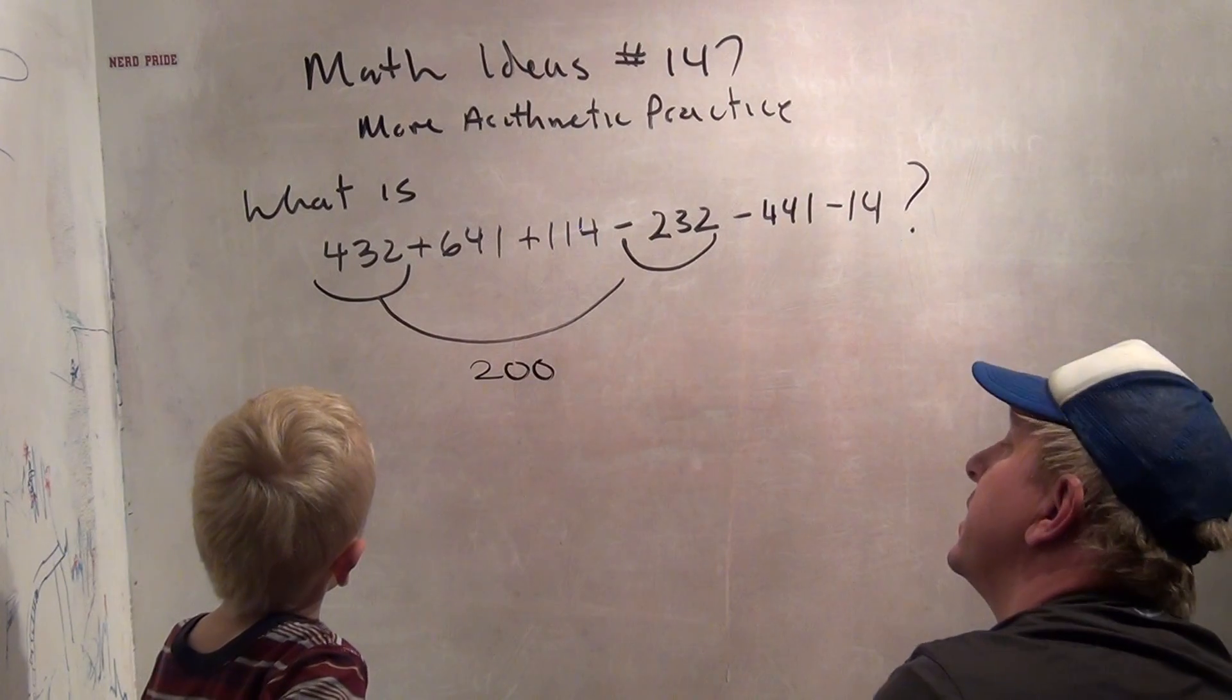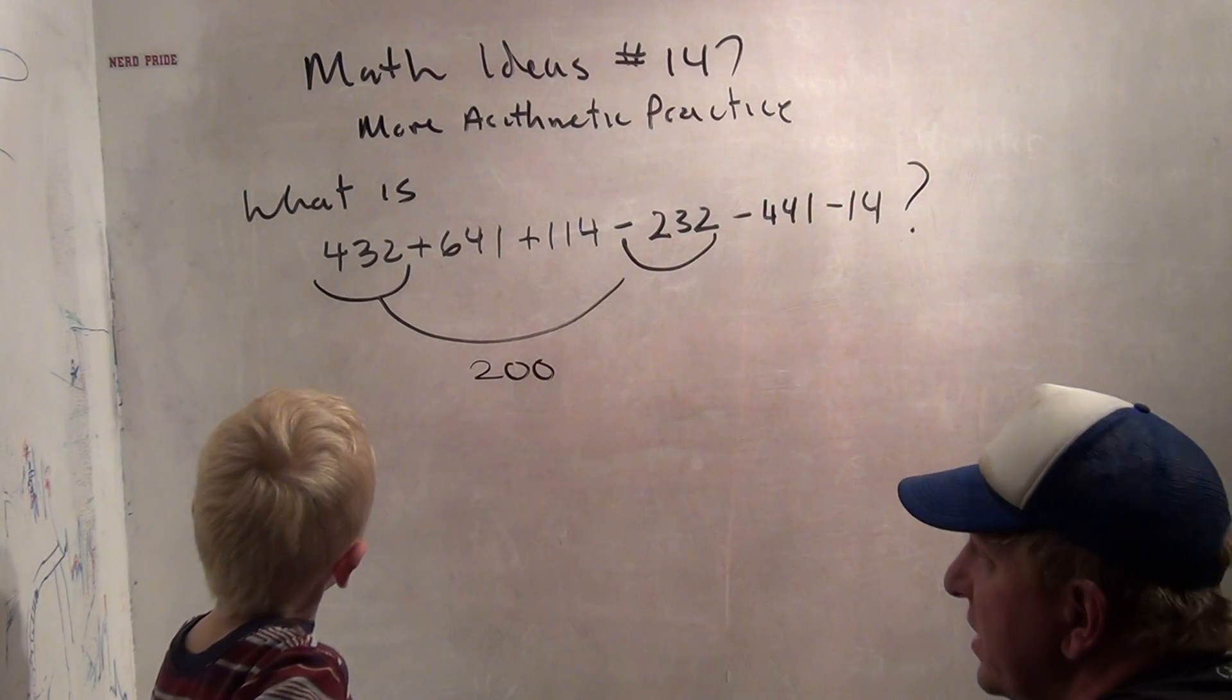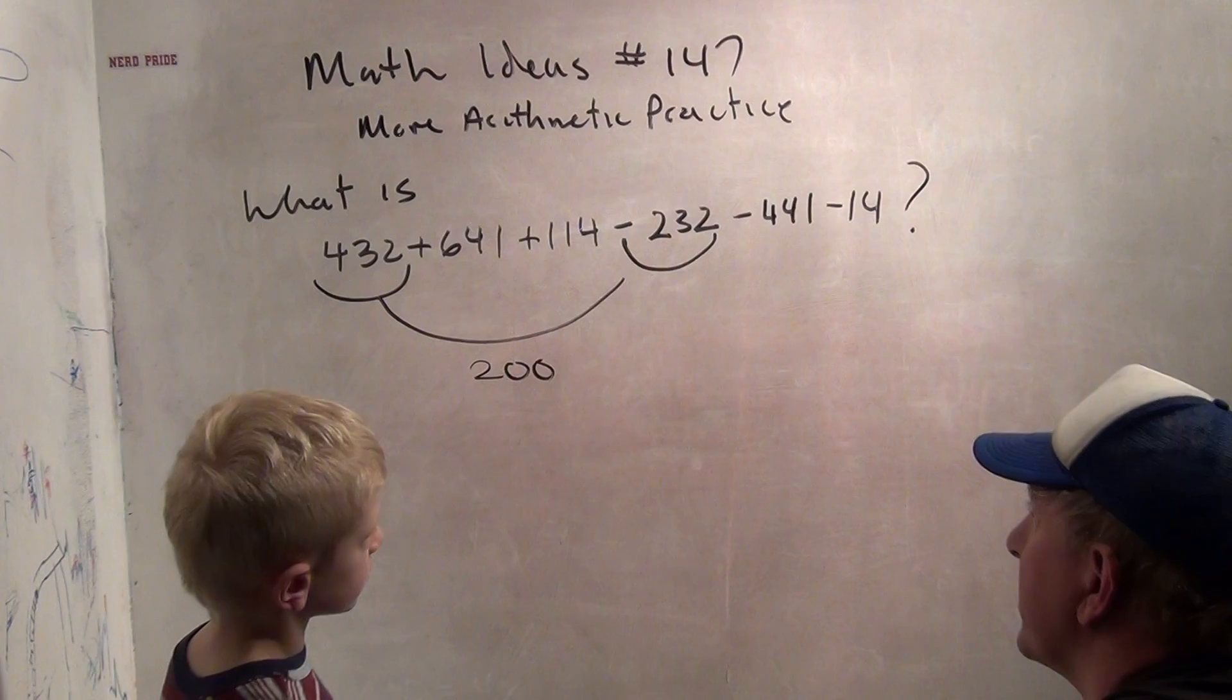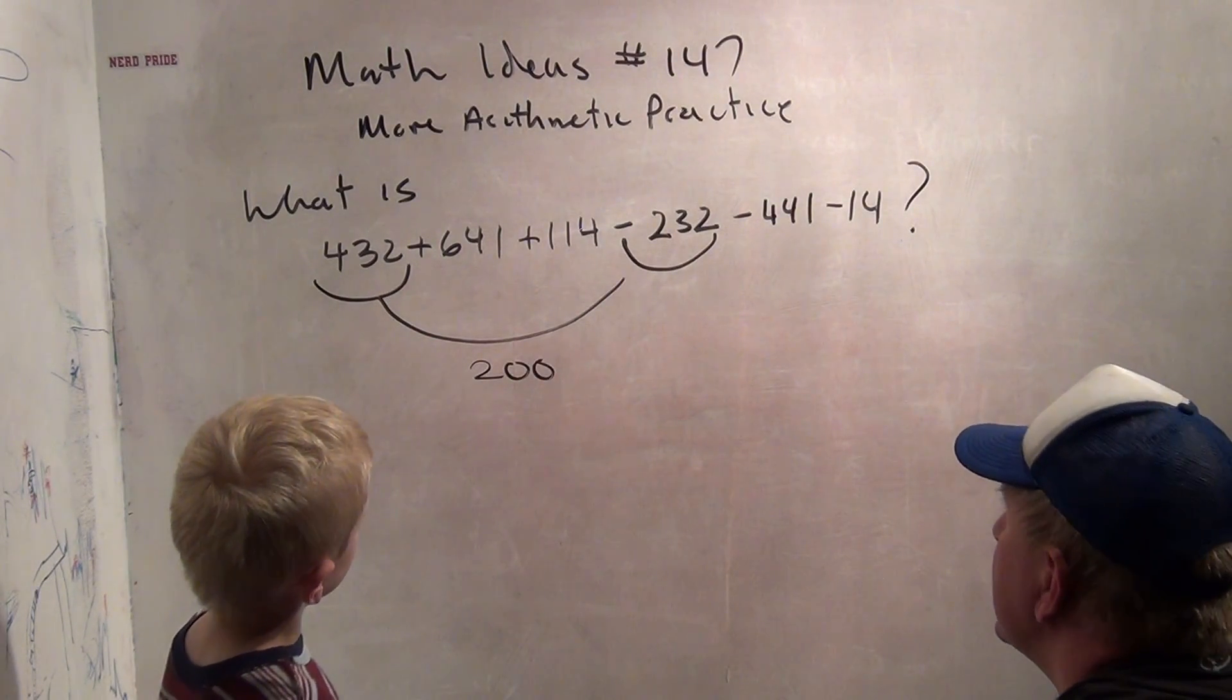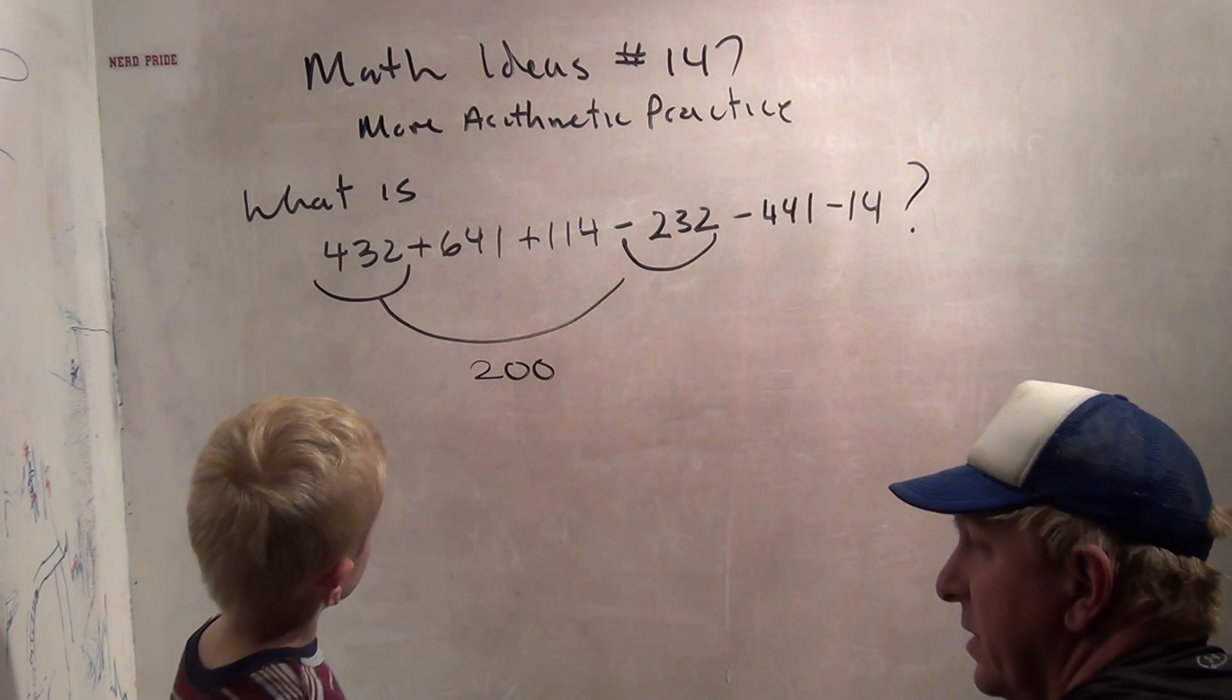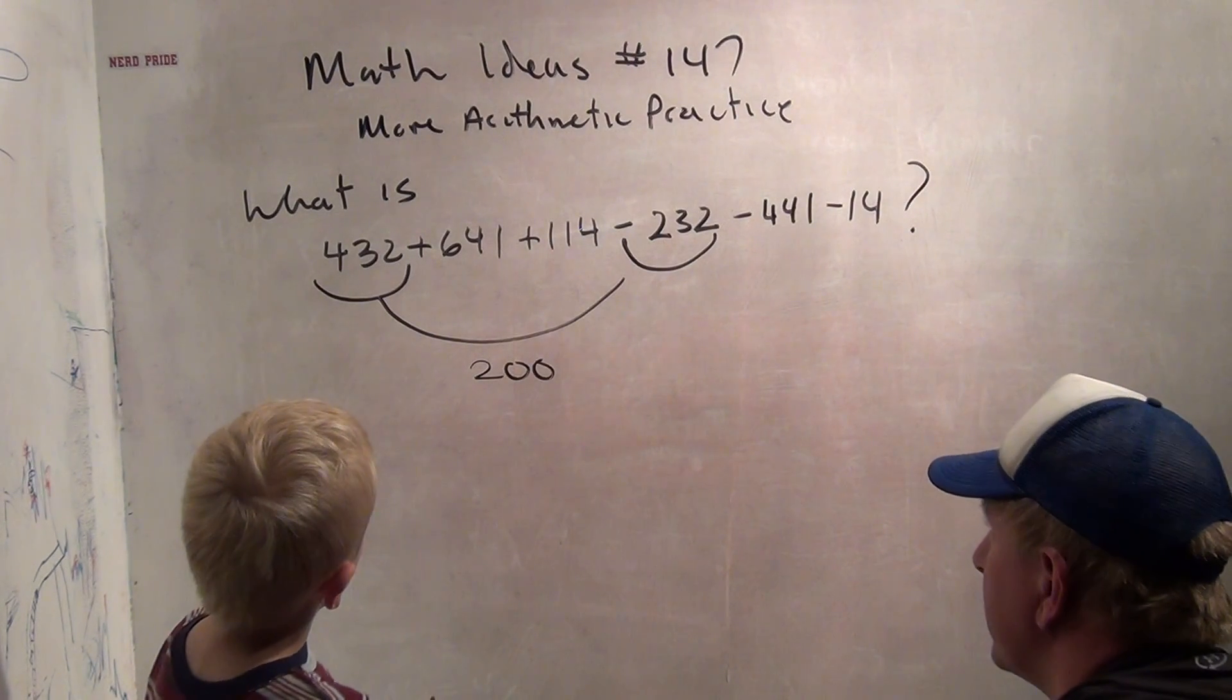So, if we just start adding all this up, that's going to be really hard, right? But we notice something really interesting. 432 minus 232 is really easy to do. It's just 200. Yeah, okay. Do you notice anything else?